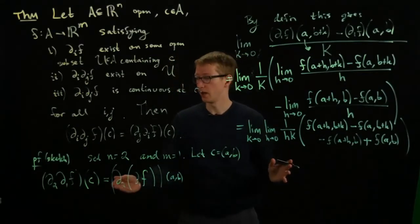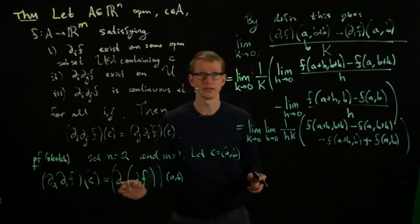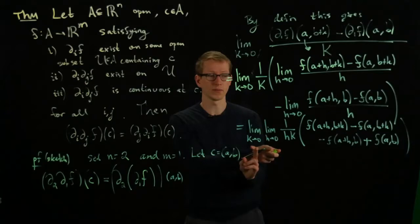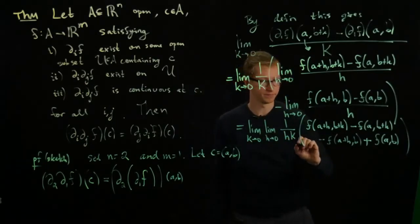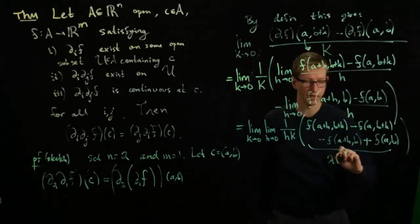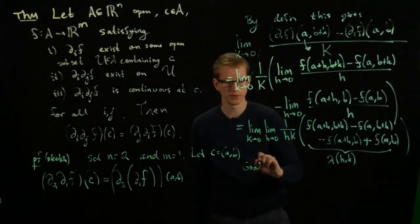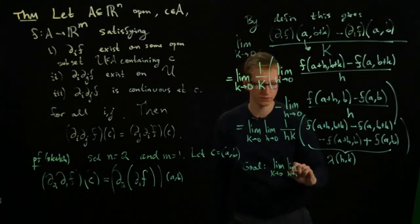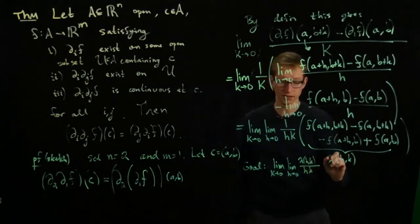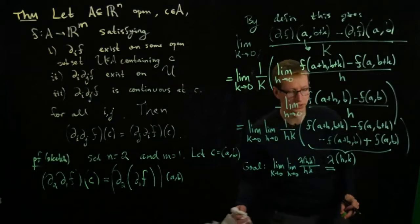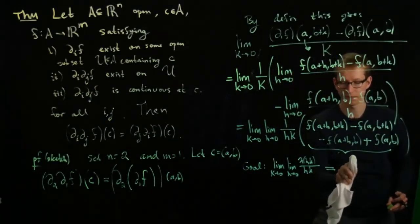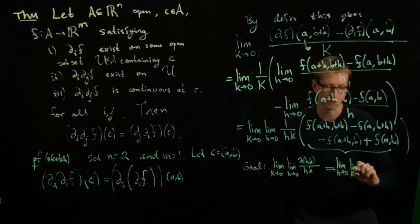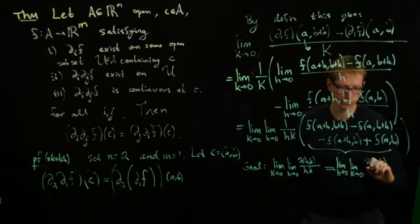This is the definition of first applying the first partial derivative and then applying the second. If we did it in the other order, the only thing that would change is the order in which these limits are taken. If we define this expression, let's call this λ(h,k). Then the goal of the theorem is to prove that the limit as k goes to 0, the limit as h goes to 0 of this function λ(h,k) over hk is equal to the limit as h approaches 0 and then k, in the other order, of the same exact function. This is our goal.